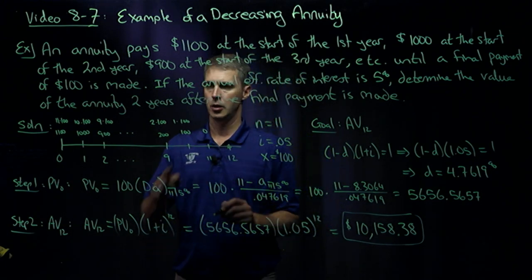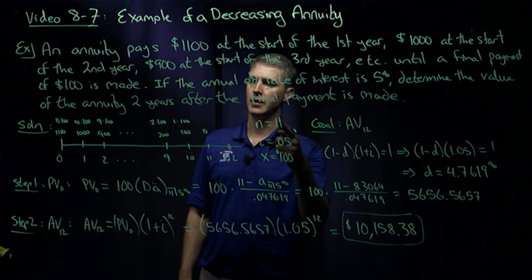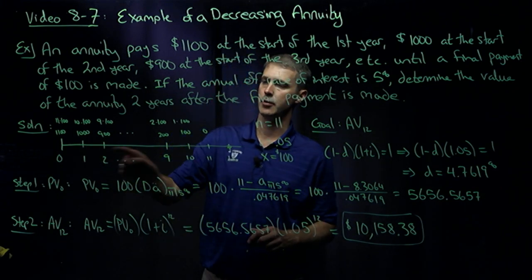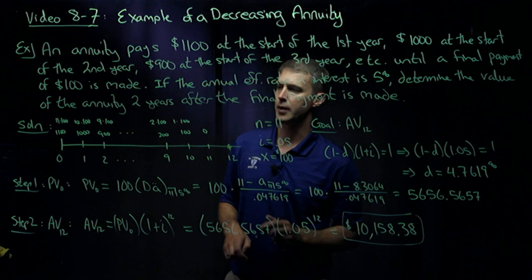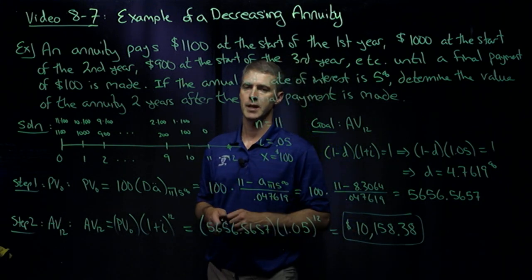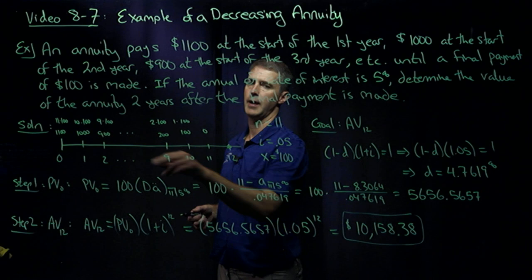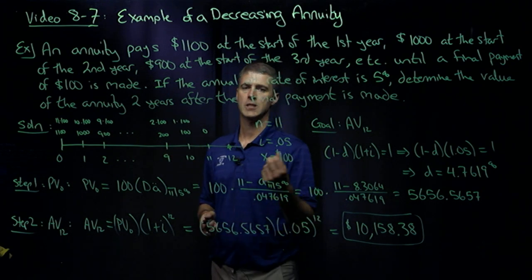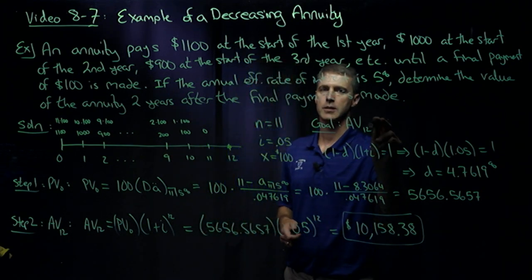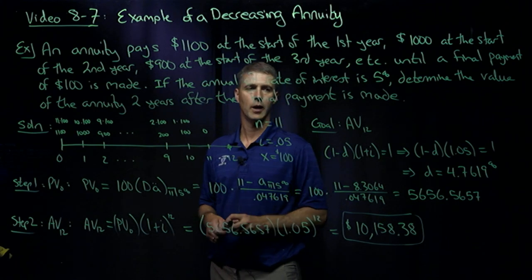So looking at what I got, it appears that I have 11 payments, payment at zero up through 10. My interest rate per period, which appears to be a year, is 5%, and my decreasing amount is $100, so my X value is 100, and I'm looking to get the accumulated value at time 12.